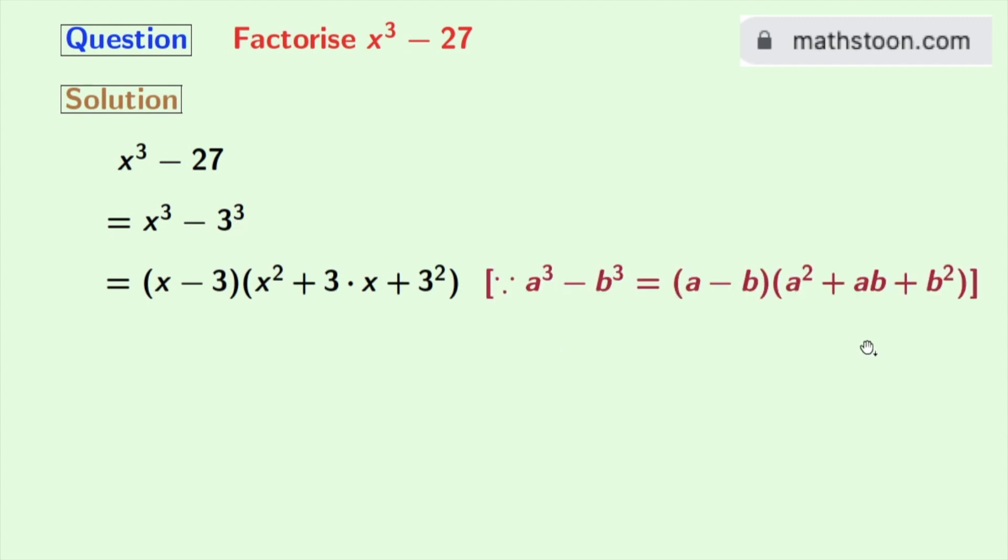Here the formula is given. Applying this we get: this is equal to (x - 3) times (x² + 3·x + 3²). Now we will simplify it. Doing so we get (x - 3) times